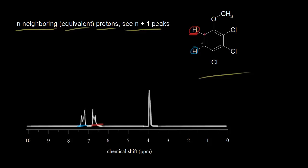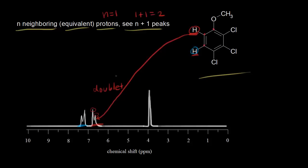If you think about this carbon and the carbon next door, this proton is a neighbor — so we have one neighbor so far. We go over to this next door carbon, and there are no protons on that carbon. So we have a total of only one neighboring proton for the red proton. N is equal to one, so we're going to see one plus one peaks — two peaks. We expect to see two peaks for the signal for the red proton. Here's the signal and we see our two peaks. This is called a doublet — the signal for the red proton is split into two peaks because of the presence of the neighboring blue proton.